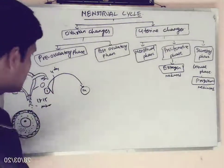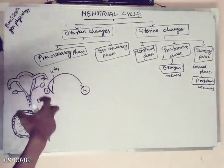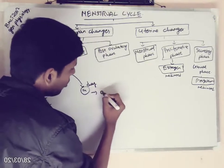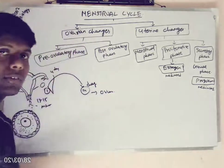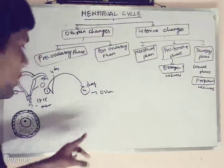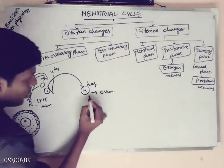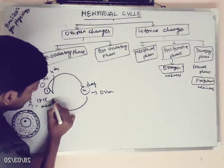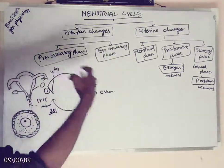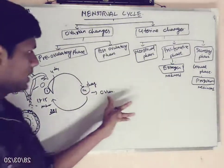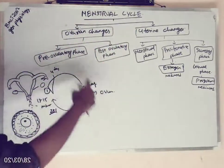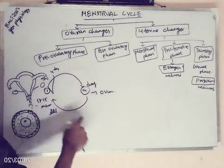During the menstrual phase she will bleed. After the 4th day, the ovary will develop and at the 14th day, the ovary will release an ovum into the abdominal cavity. From the 14th to the 28th day, the uterus will be in a growth stage. After the 28th day, if the ovum is not fertilized, it will go back to the menstrual phase and the cycle will repeat. This is called the menstrual cycle.